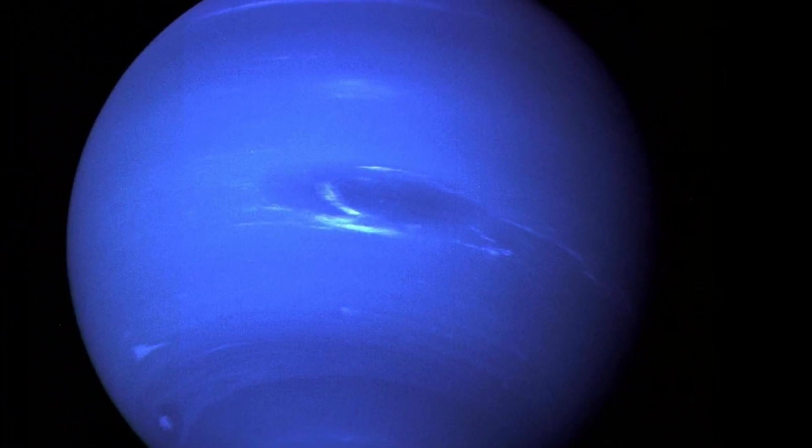Neptune has a storm similar to the Great Red Spot on Jupiter. It is commonly known as the Great Dark Spot and is roughly the size of Earth.